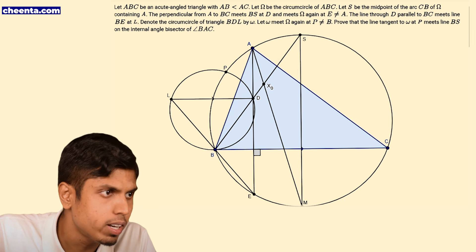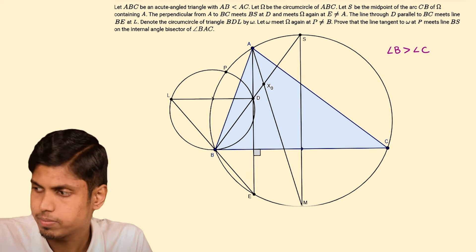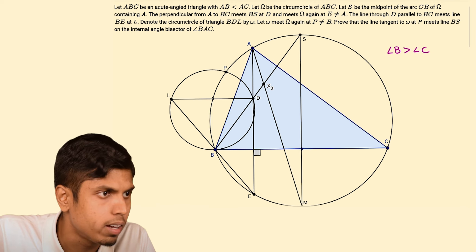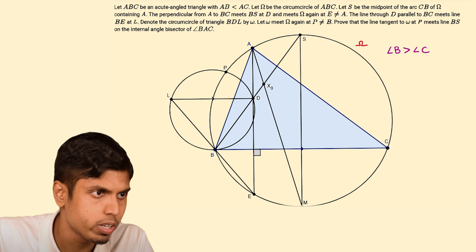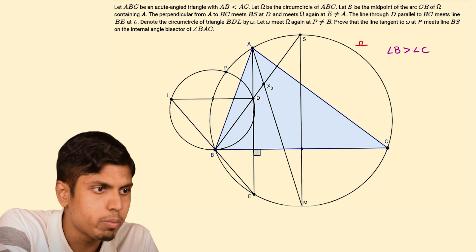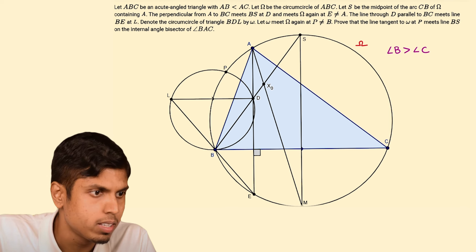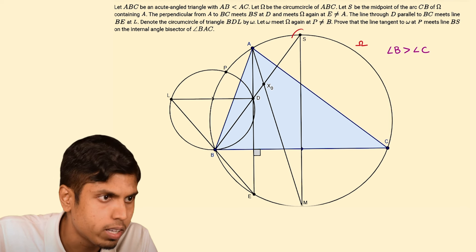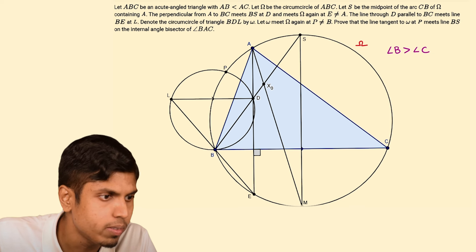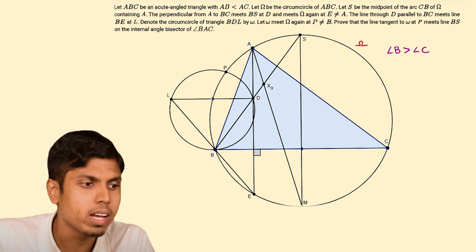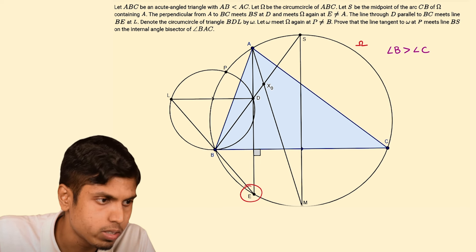Equivalently, we can use the fact that angle B is greater than angle C. Omega is the circumcircle, which is also shown here. S is the midpoint of the arc BC containing A, also marked here. The perpendicular from A to BC intersects omega again at E — that is this point, and this is the perpendicular.